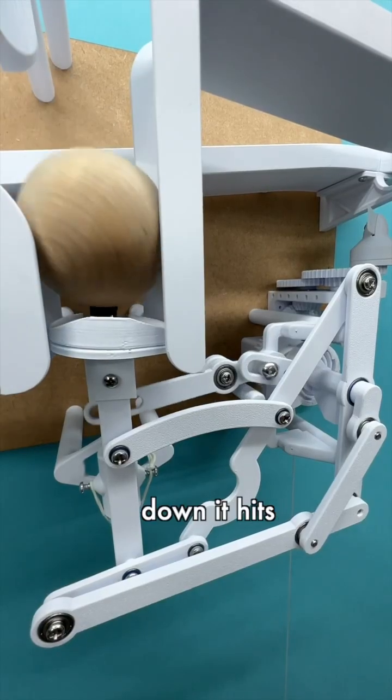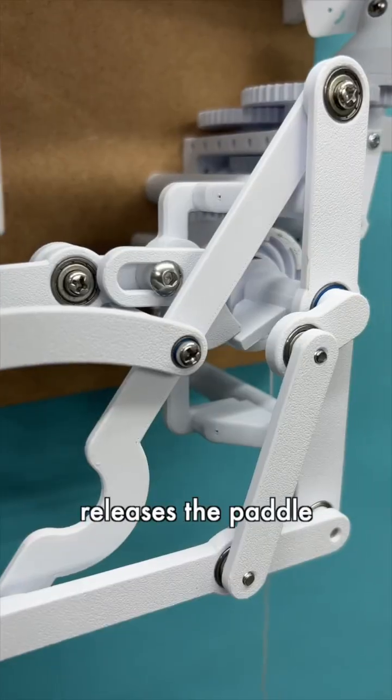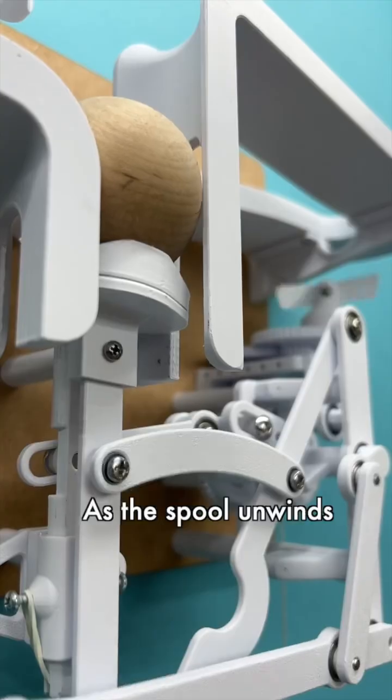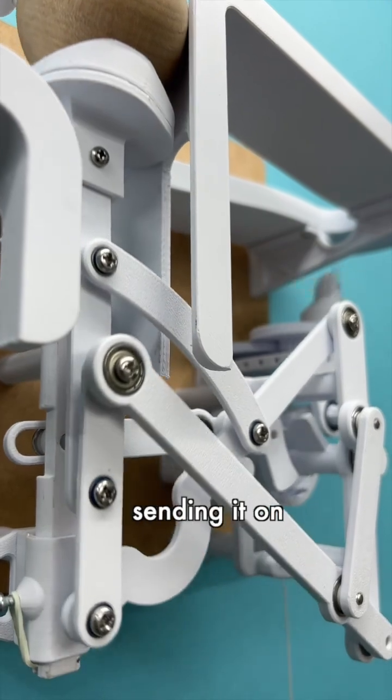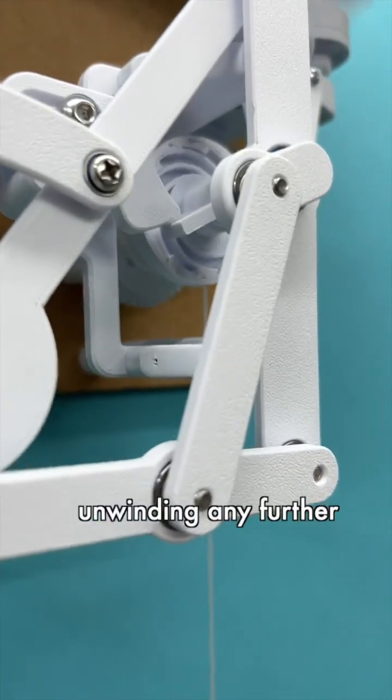The way it works is as the ball comes down, it hits this plunger. That moves this link, which pulls this link back, and that releases the paddle that is connected to the spool. As the spool unwinds, it lifts the ball up, sending it on its way, and then the latch returns to its original position, which stops the spool from unwinding any further.